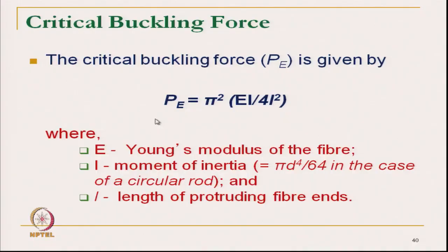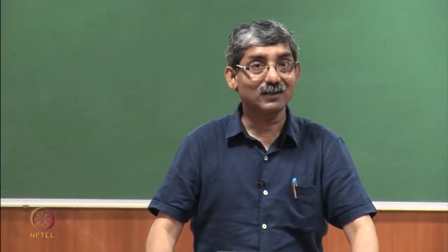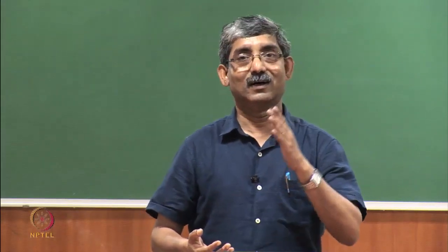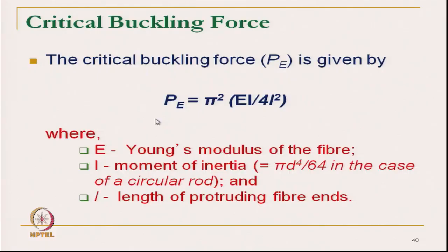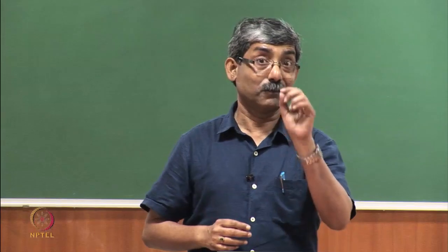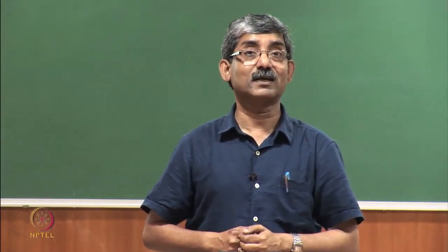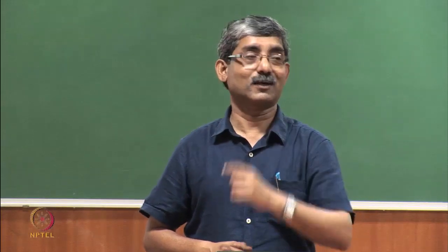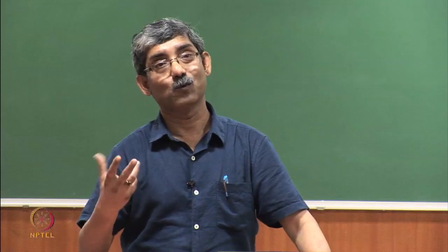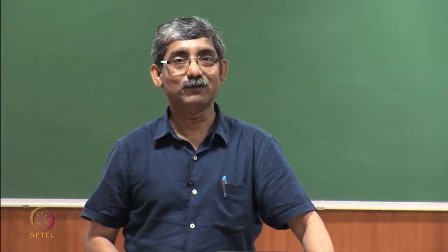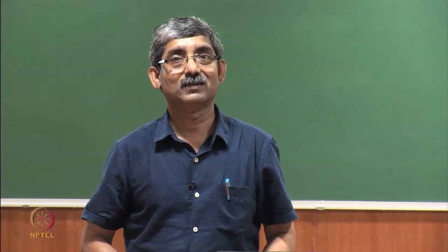With this equation we can get the critical buckling force. Higher Young's modulus gives higher critical buckling force — meaning higher prickle sensation. If the bending rigidity or moment of inertia is high (directly proportional to fibre diameter), coarser fibre gives higher buckling force and higher prickle sensation. Longer fibre gives less buckling force. So it is a combination of Young's modulus, diameter, and length of fibre. Coarser fibre with longer length may effectively give less buckling force and may not cause prickle sensation.